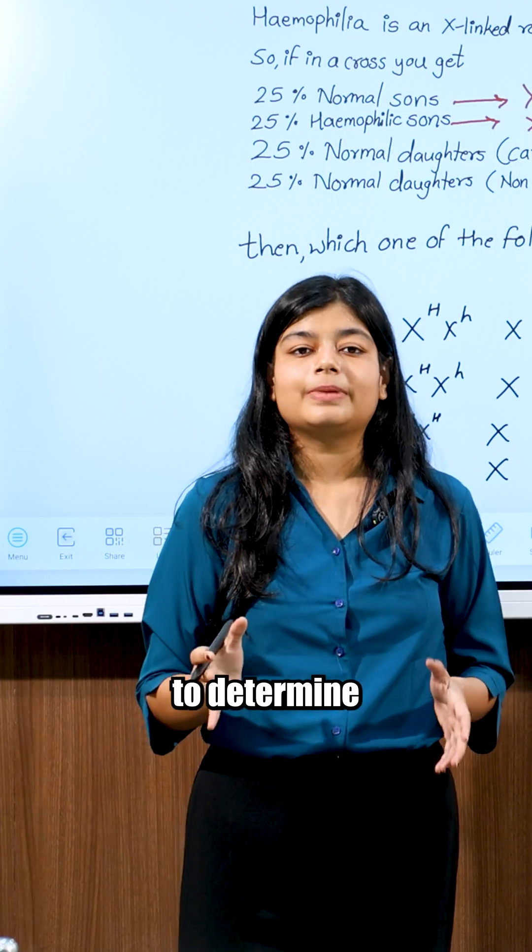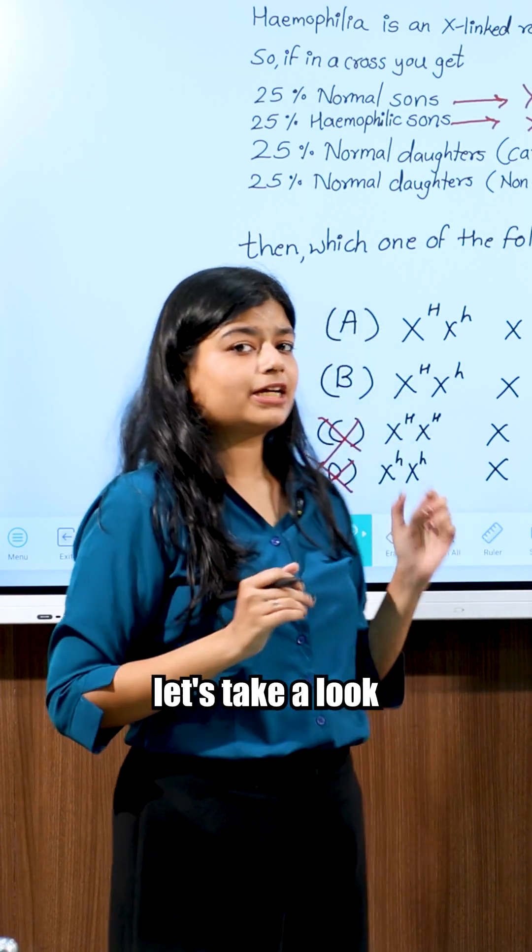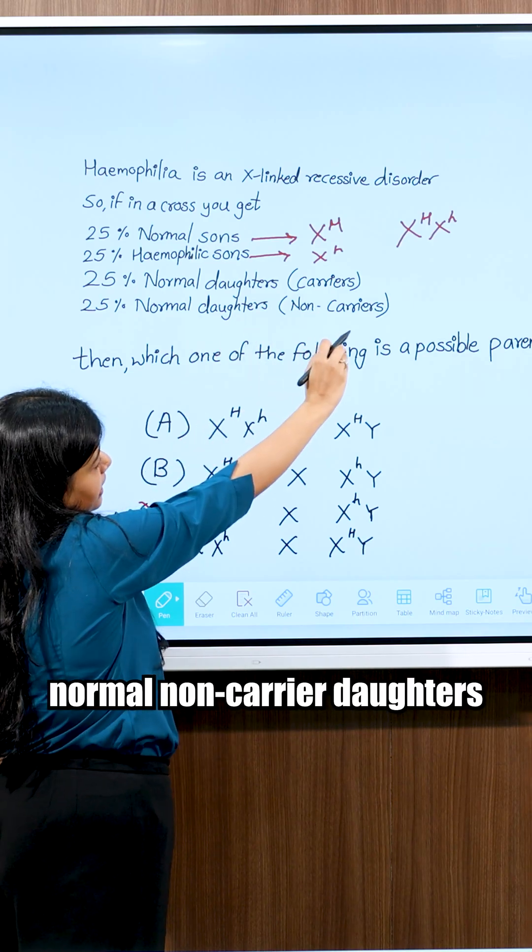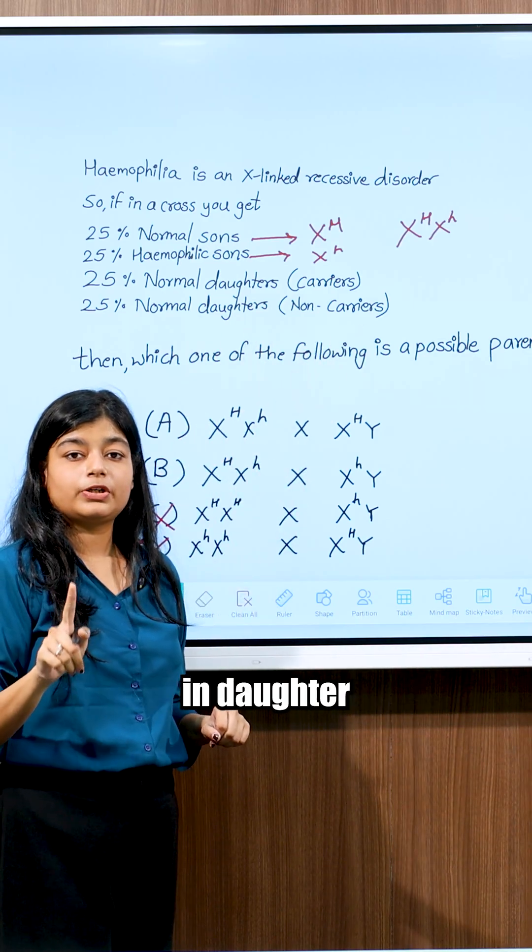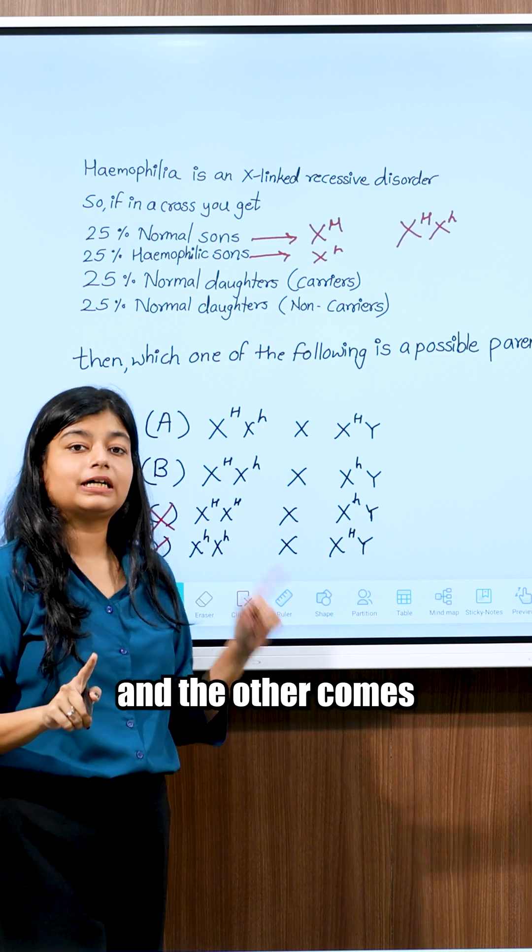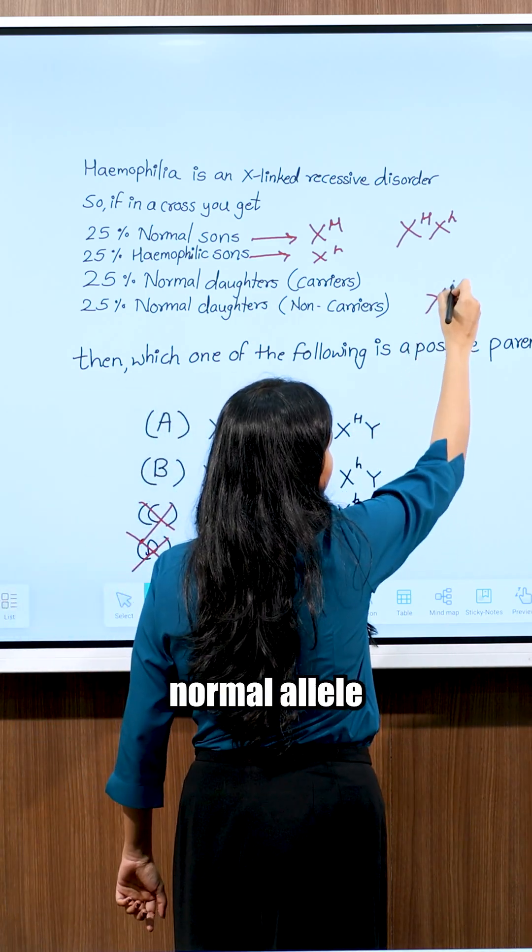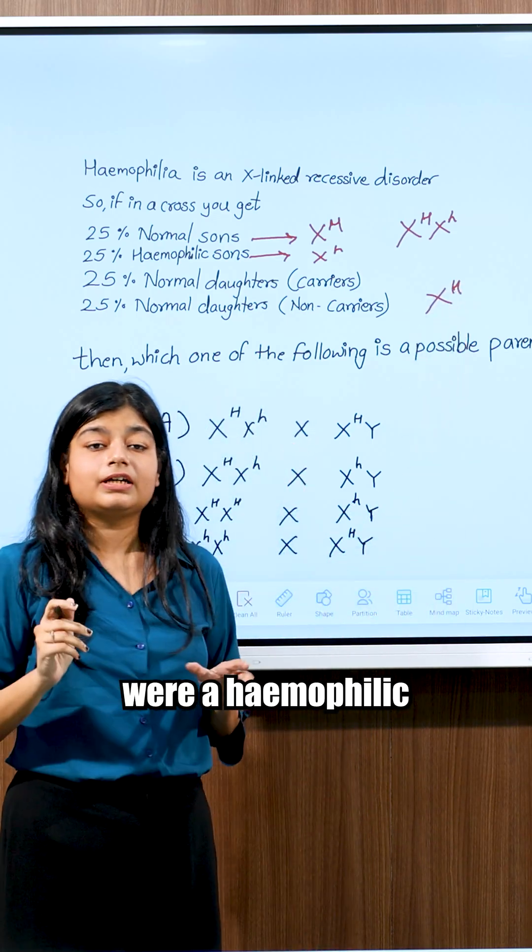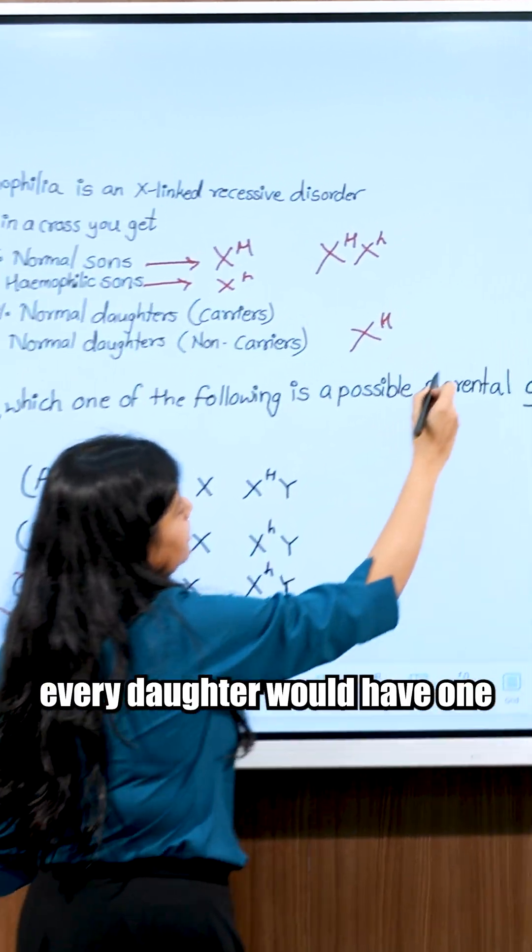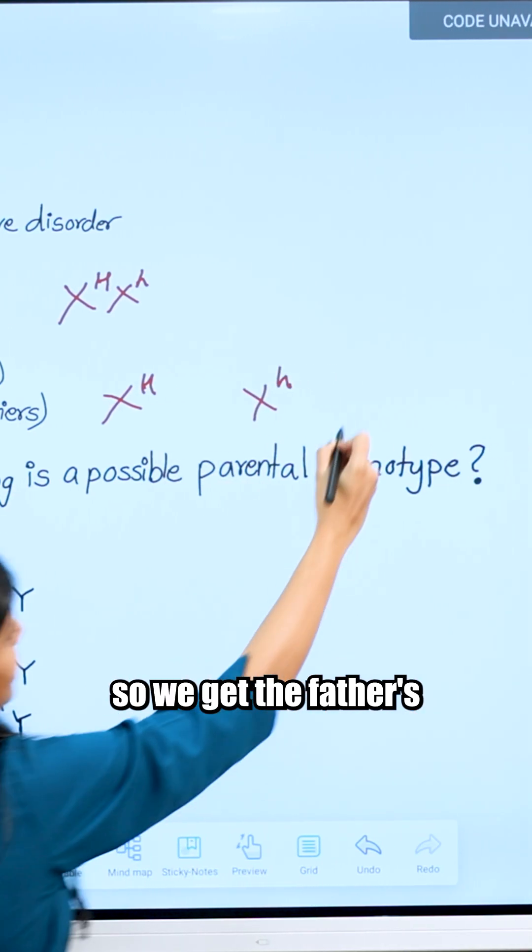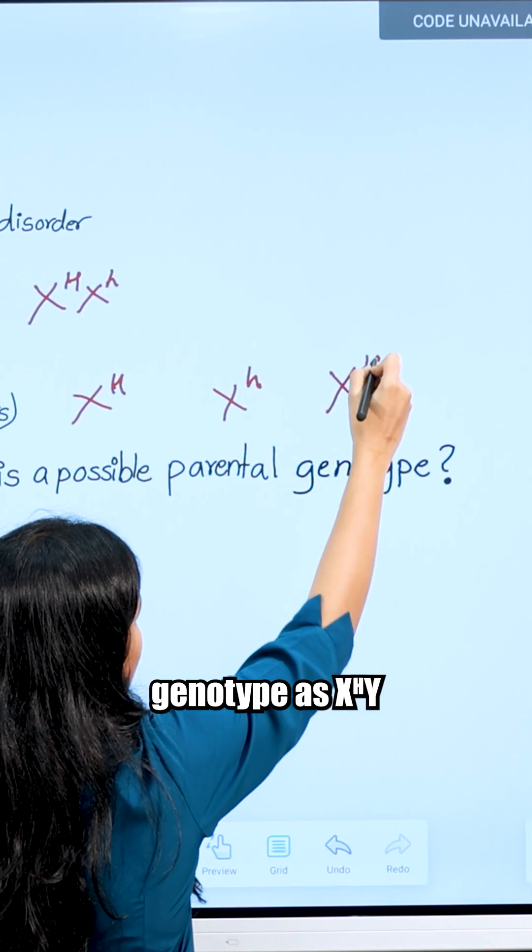Now, to determine the father's genotype, let's take a look at the daughters. We have 25% normal non-carrier daughters. Since one X-chromosome in the daughter comes from the mother and the other comes from the father, the father must have one normal allele. Because if the father were haemophilic, every daughter would have one mutant allele, and that is not the case. So we get the father's genotype as X-H-Y.